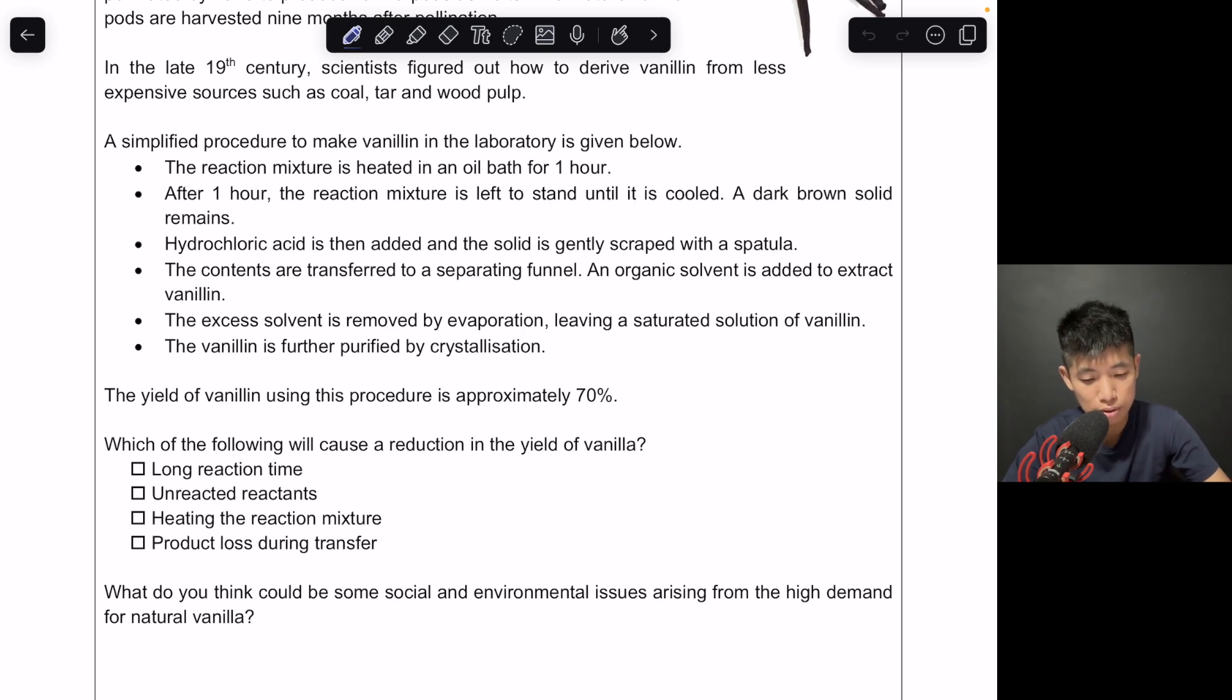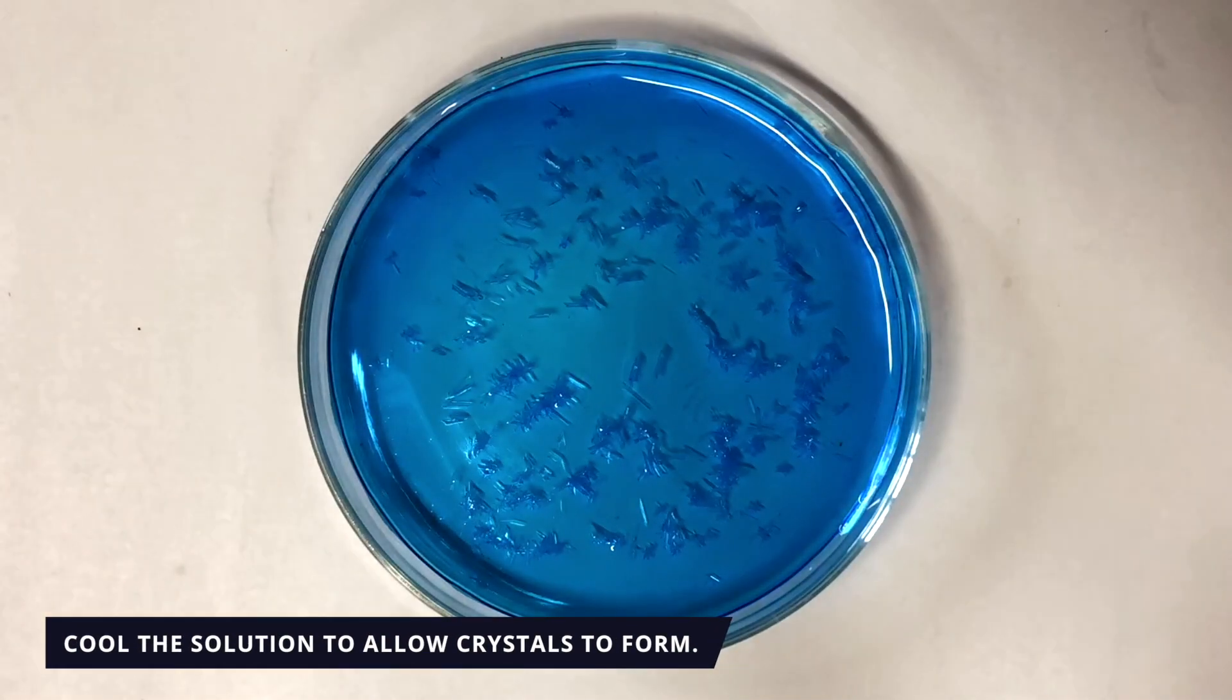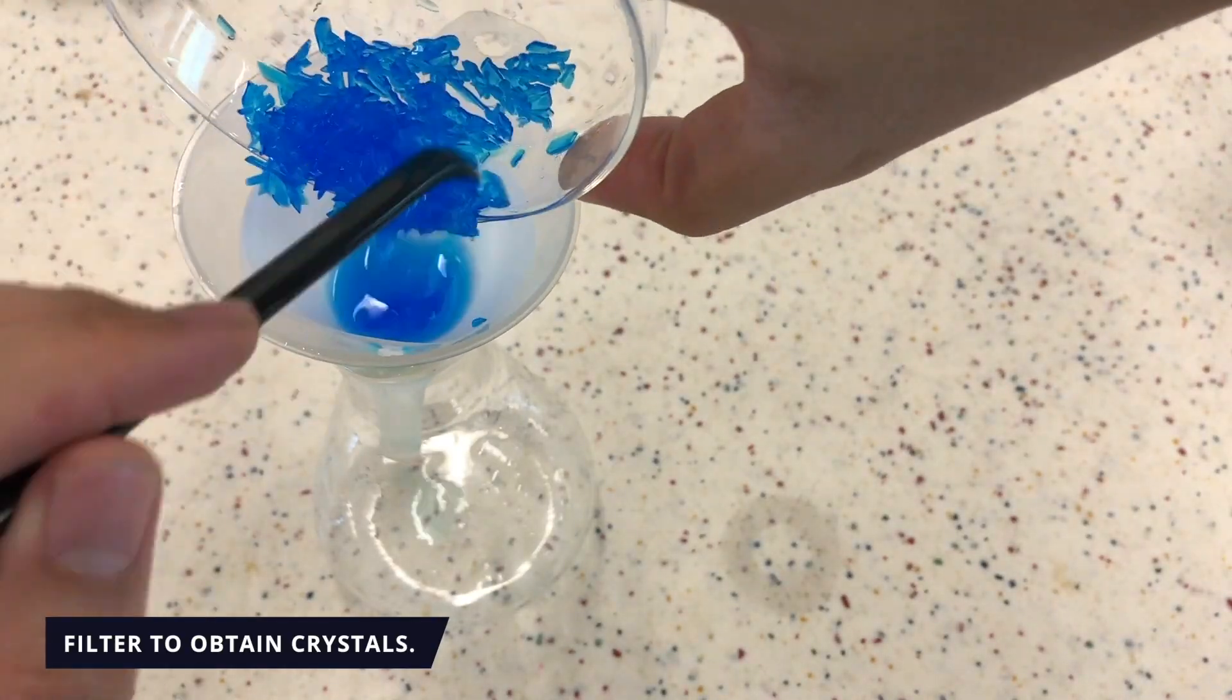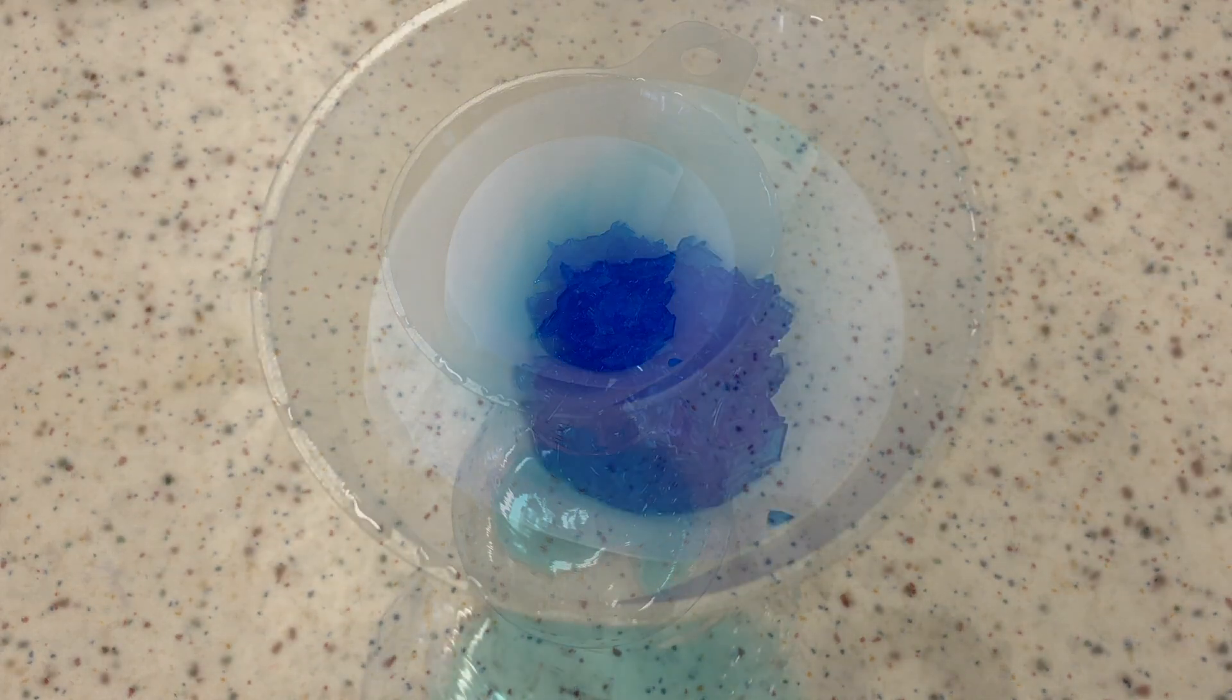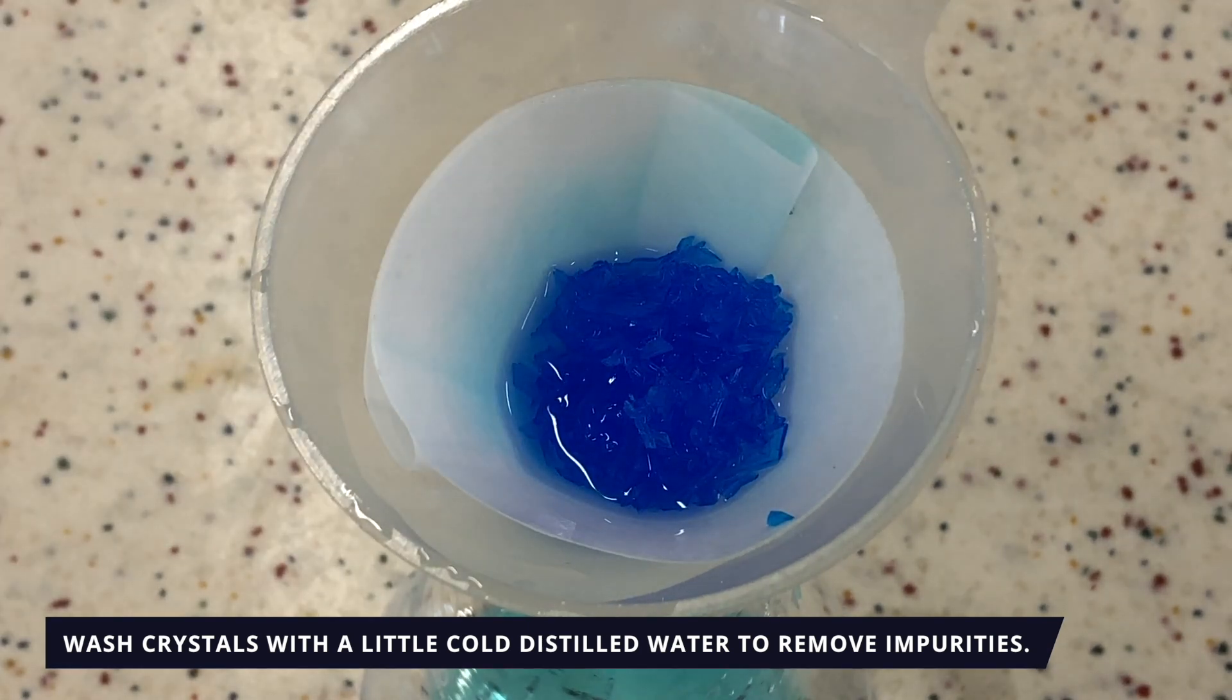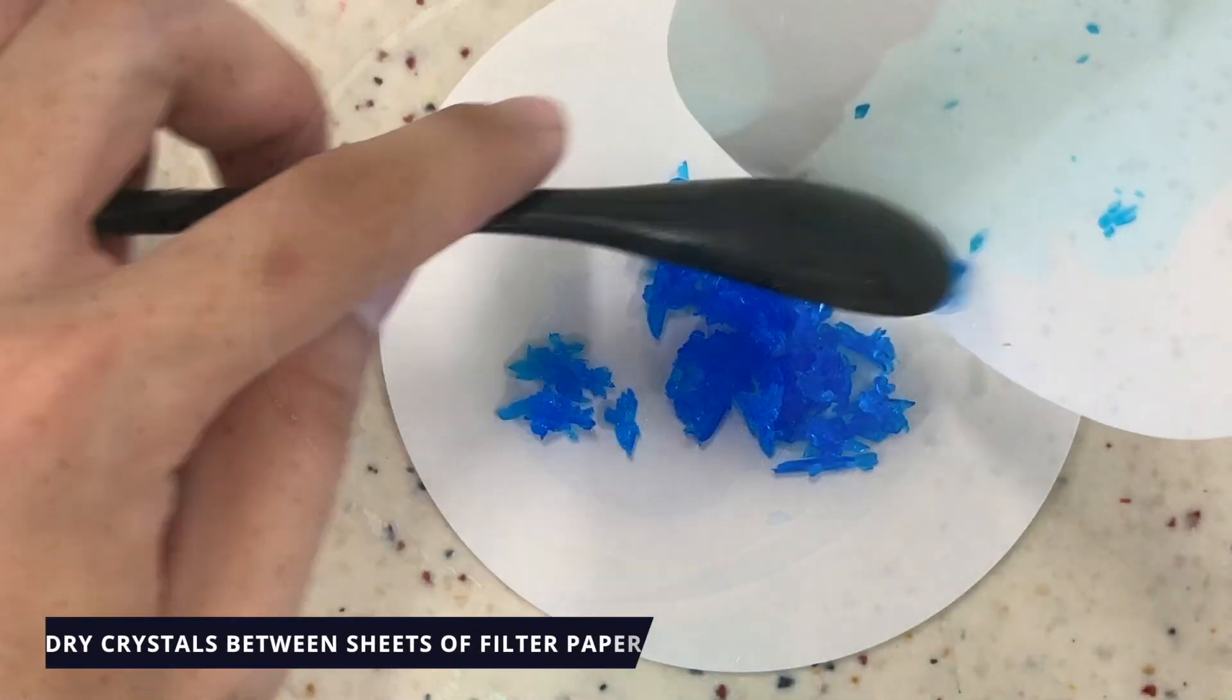If you look at the procedure, this is what they actually do. You might find some of the methods here quite familiar, like the use of a separating funnel, the use of crystallization and evaporation and separation techniques. And you know that when you carry out a chemical reaction, you are going to lose certain things somewhere. Maybe you spill something or when you do filtration, some of the stuff is left on the filter paper. Or when you do crystallization, the crystals grow from the solution, but the solution still contains a bit of the dissolved solute.